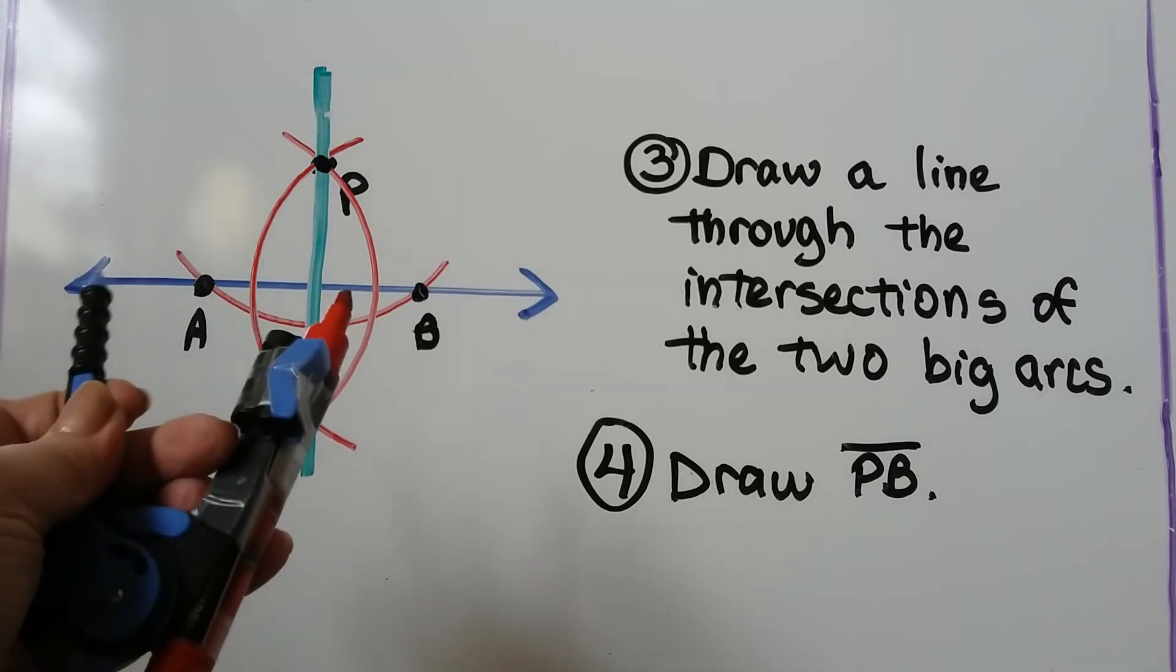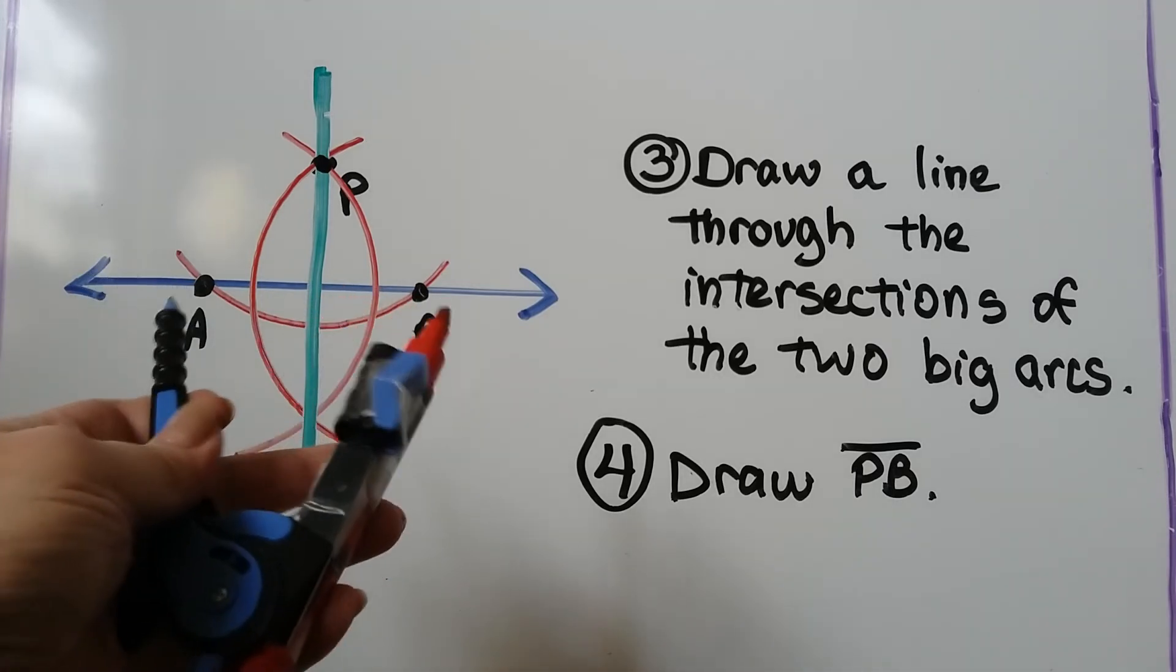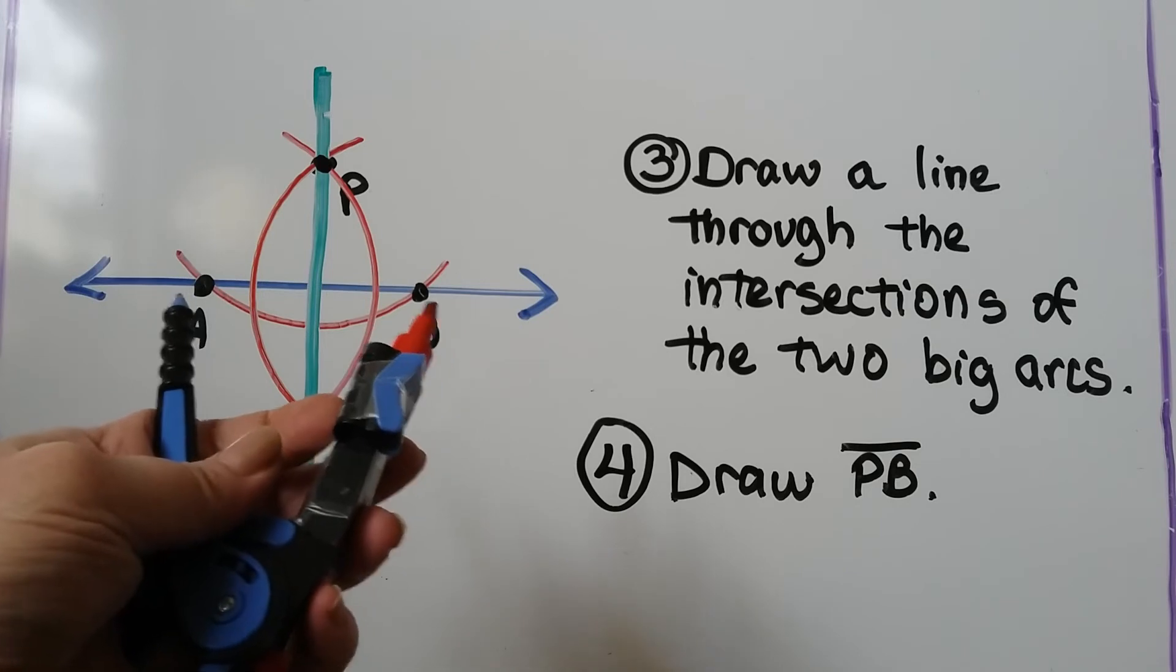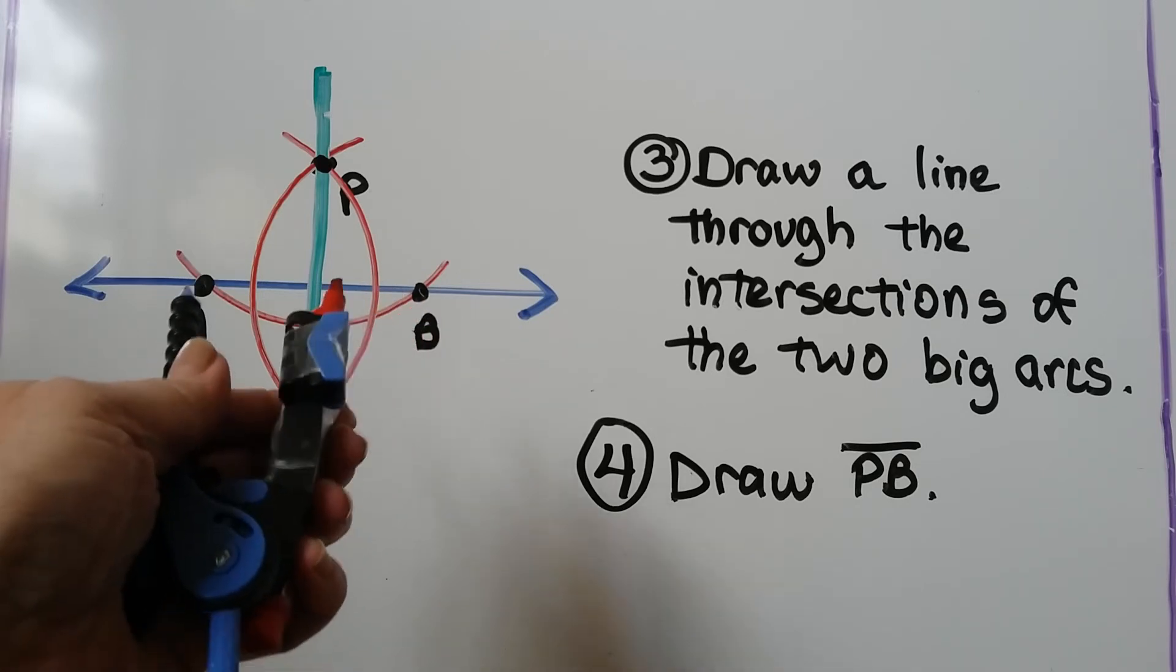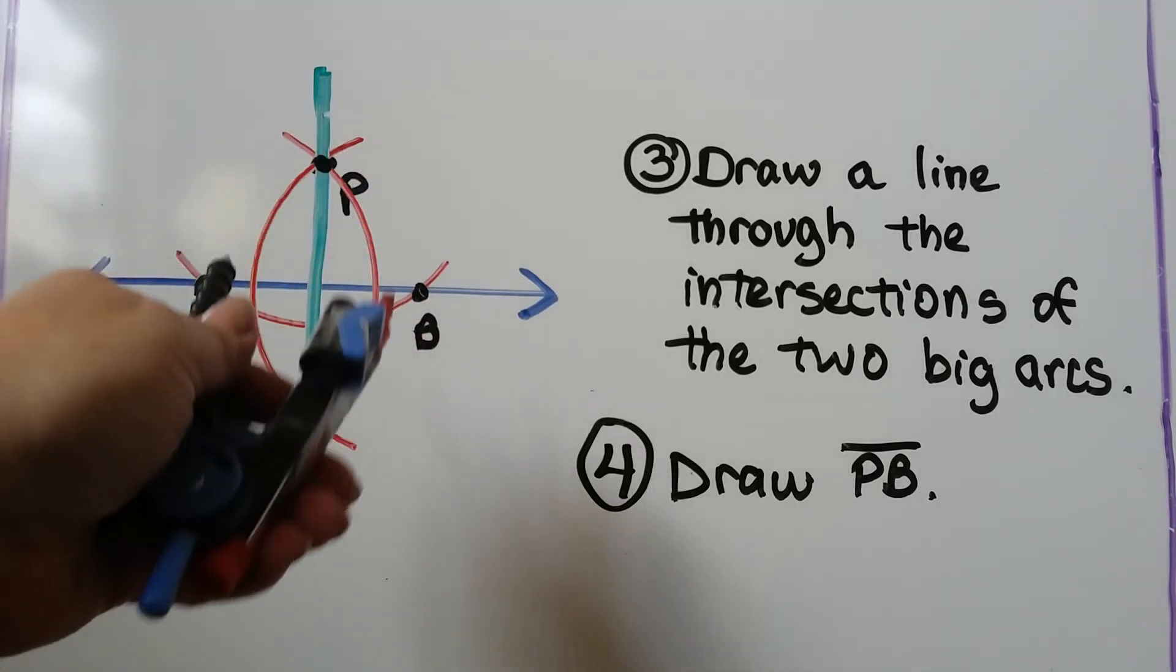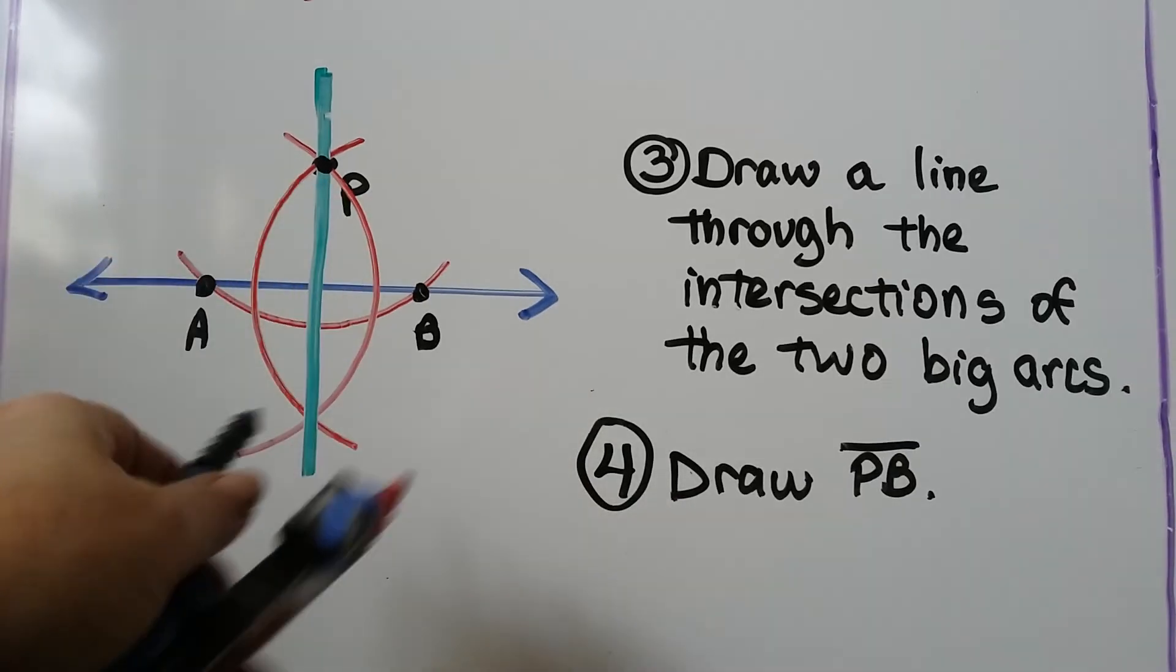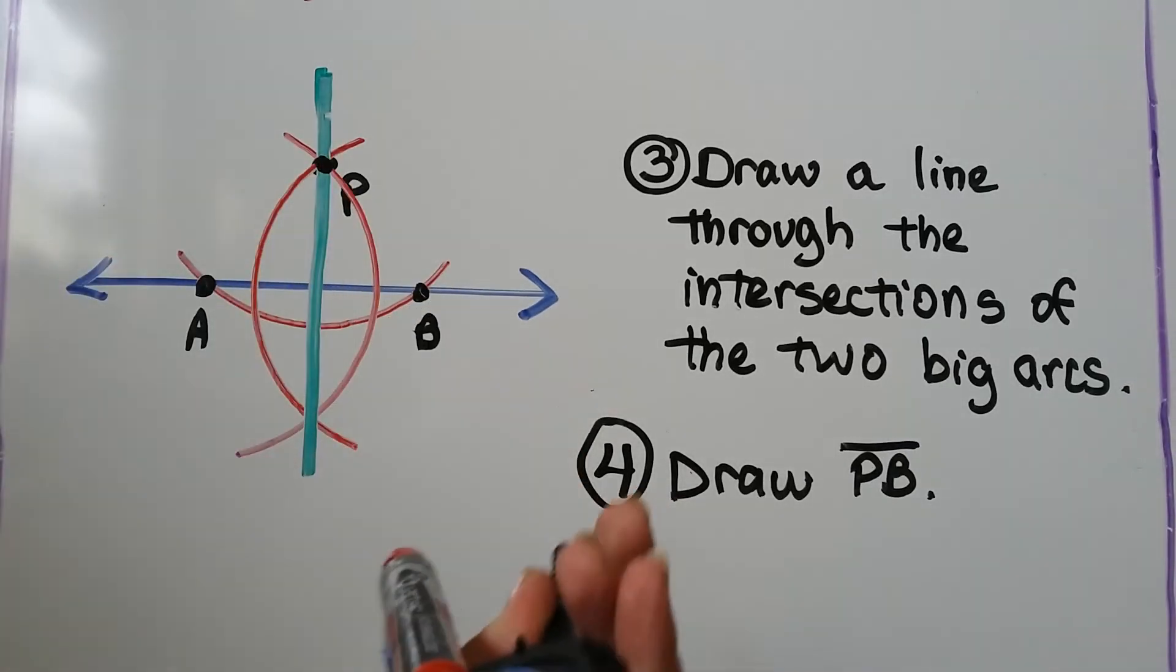Then we set the compass a little more than halfway between A and B and made a large arc with the point on A. We did the same for B, making another large arc.